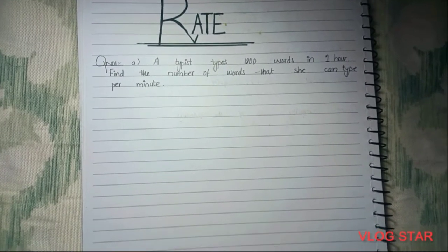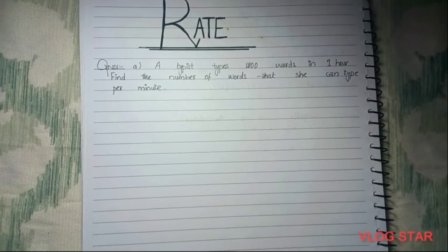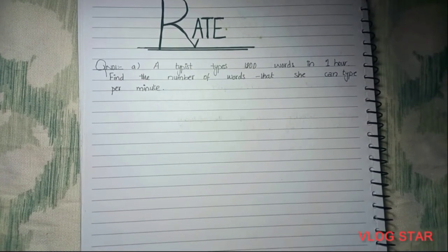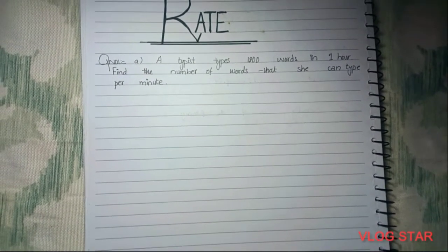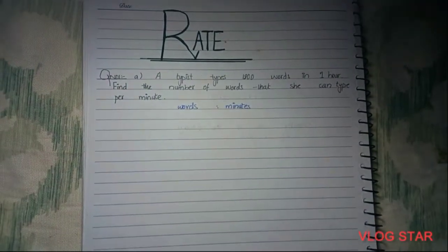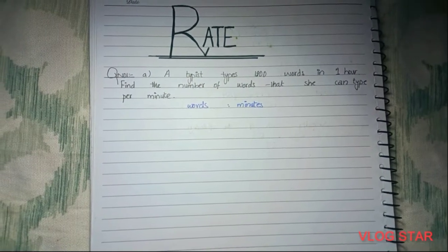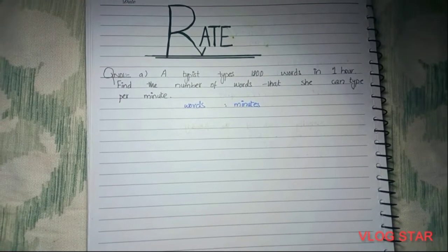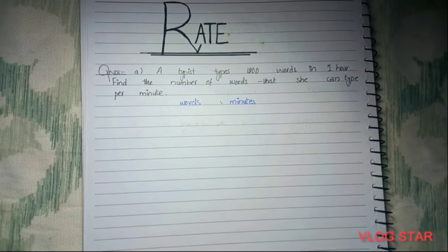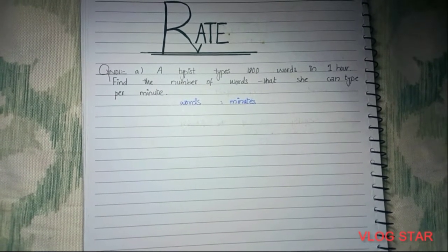Starting from question number one, part a: a typist types 1800 words in one hour. Find the number of words that she can type per minute. Our whole question is talking about two things — words and minutes — so we'll make a ratio like this: words to minutes.